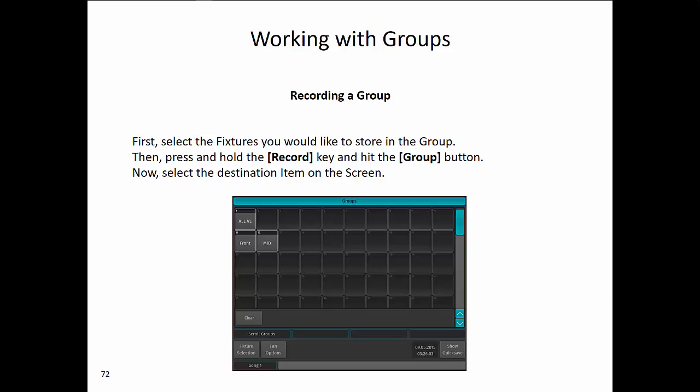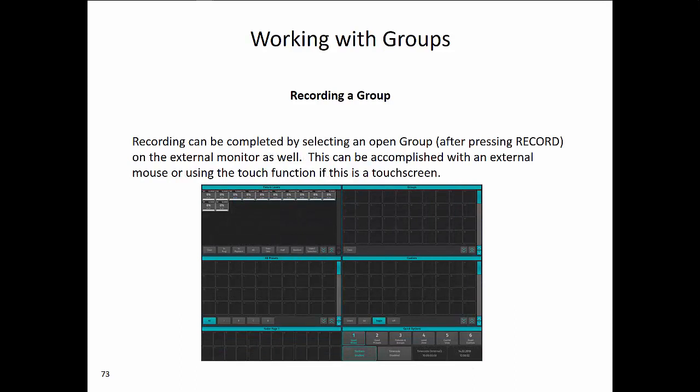To recap: first select the fixtures you would like to store, then press and hold the Record key and the Group button. This display shows the window that will appear on the internal monitor, and then you select a destination item on the screen. Recording can also be completed by selecting an open group after pressing Record on the external monitor's group pool, using an external mouse or the touch function if it is a touch screen.